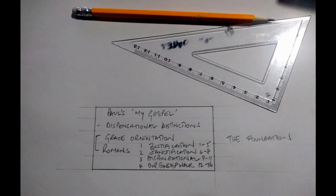Paul's my gospel, what's in that? Containing that are the dispensational distinctions, prophecy, mystery, Israel, the body of Christ, heaven, earth, and then included in all that is our grace orientation.